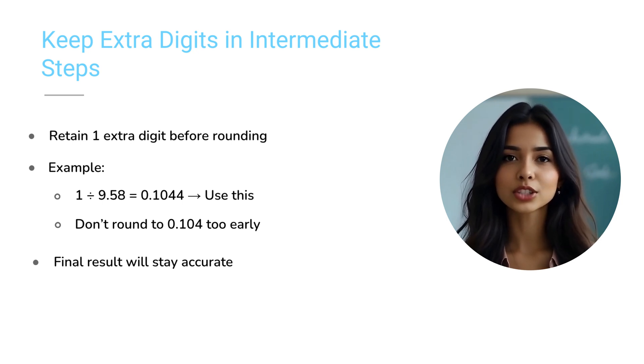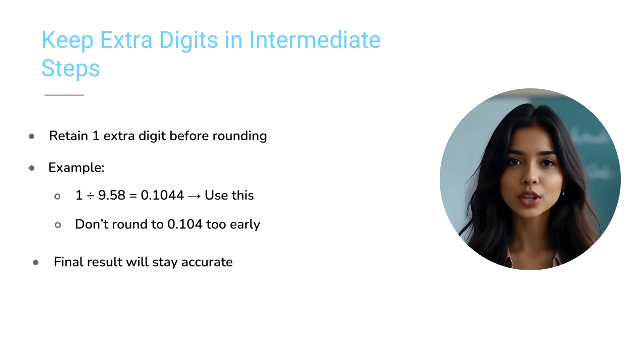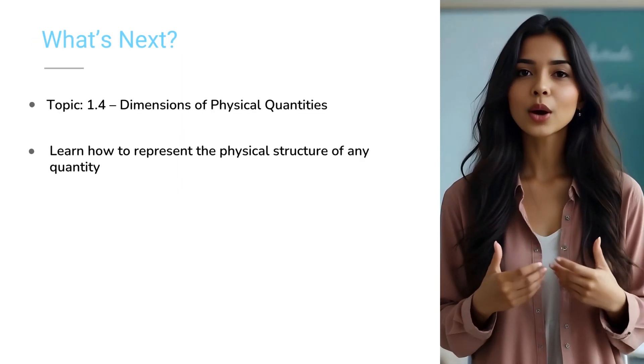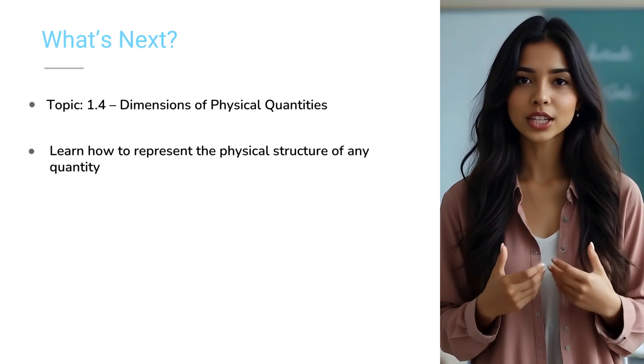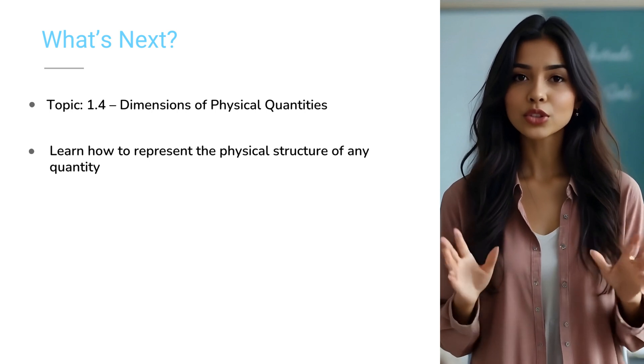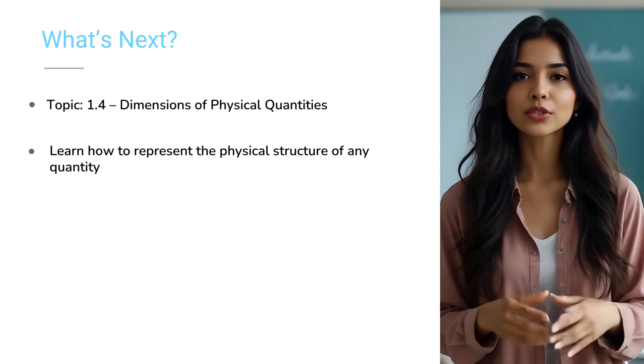If you use 0.104 instead of 0.1044, then its reciprocal becomes 1 divided by 0.104 equals to 9.62, which is not equal to the original 9.58. That's a noticeable error, just because of premature rounding. Now you know how to handle uncertainty during calculations. This ensures your results reflect the true reliability of your data.